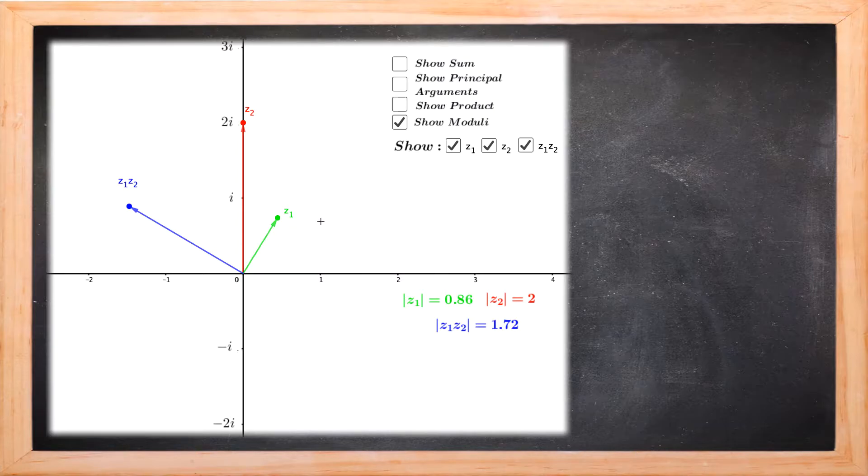But you'll now notice that the arguments come into this. Z1 started here with an argument of 1.03. It was multiplied by Z2 which has an argument of 1.57 or pi upon 2. The net result was a rotation by pi upon 2. So we've started with 1.03 and added pi upon 2 which is approximately 1.57 to get the argument of Z1 Z2.